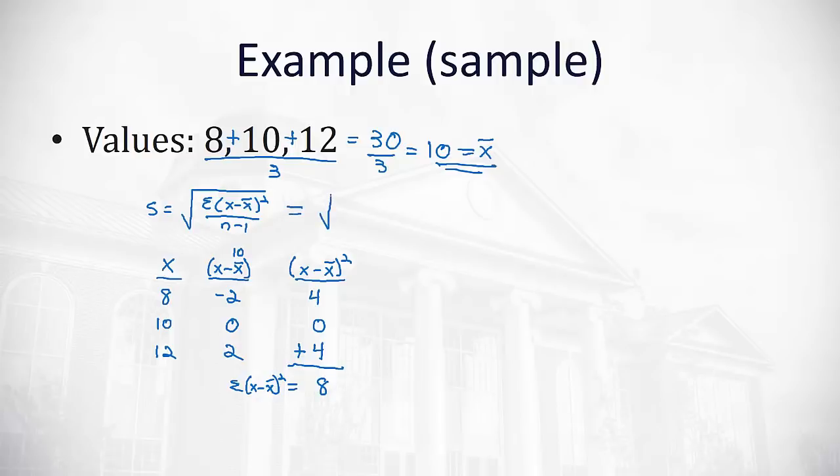So that means in our numerator, we know the sum of x minus x bar squared is 8. 8 divided by n minus 1. n is the sample size. We only have 3 here. So 3 minus 1 is 2. 8 halves reduces to 4. And the square root of 4 is 2. So the standard deviation of these three numbers is 2. Or on average, each point is about 2 from the mean.